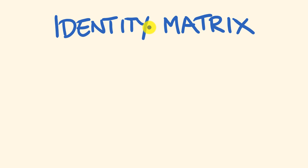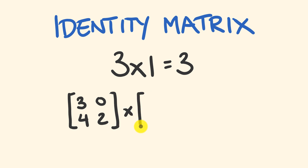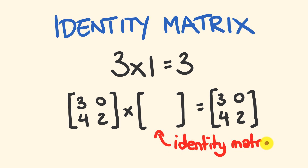Let's start out by having a look at the identity matrix. In normal mathematics, if you multiply a number by one, it doesn't change that number — for example, three times one is equal to three. Is there a similar situation that occurs with matrices? Say I had this square matrix here: 3, 0, 4, 2. Is there a matrix I could multiply this by — a similar two by two matrix — that would mean the result would be exactly the same: 3, 0, 4, 2? By multiplying, it would remain unchanged.